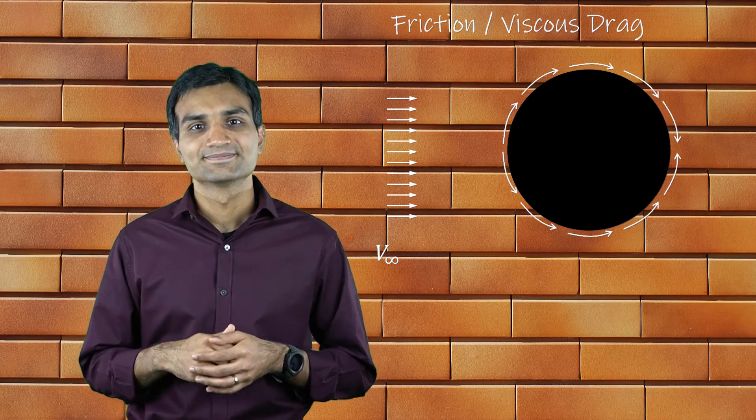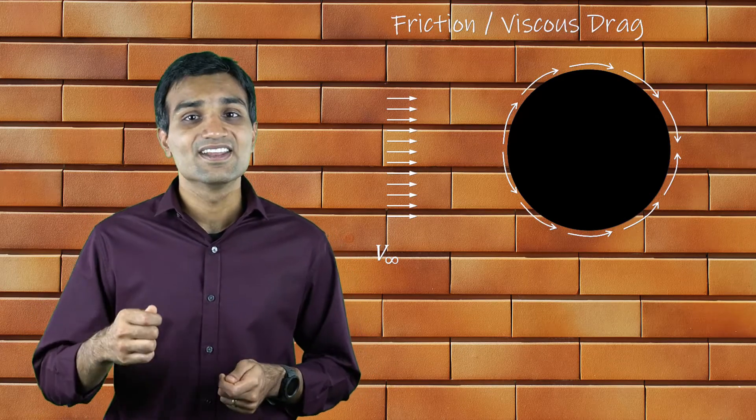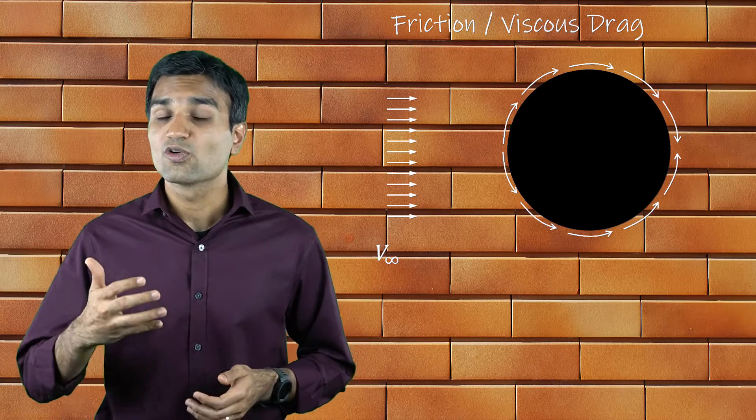When air flows over a bluff body such as a cylinder, the boundary layer on the cylinder starts to grow. The flow remains attached to the surface of the cylinder and the fluid is trying to overcome the resistive shear forces exerted by the cylinder. This is referred to as friction or viscous drag.